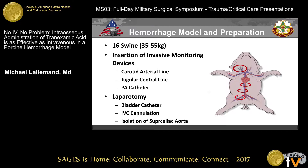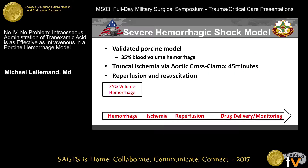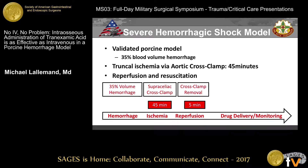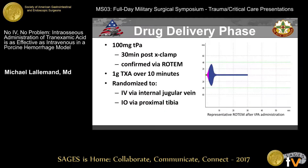We ran 16 animals through our hemorrhage and ischemia-reperfusion model, where all underwent a prep phase: a 35% controlled blood volume hemorrhage, induction of ischemia via a 45-minute supraceliac aortic cross clamp, reperfusion over five minutes, and then a four-hour drug delivery and monitoring phase. We augmented fibrinolysis by delivering a 100-milligram bolus of TPA 30 minutes after cross clamp removal, confirmed hyperfibrinolysis with ROTEM, and then administered a one-gram dose of TXA randomized to either an internal jugular infusion or a proximal tibial IO.